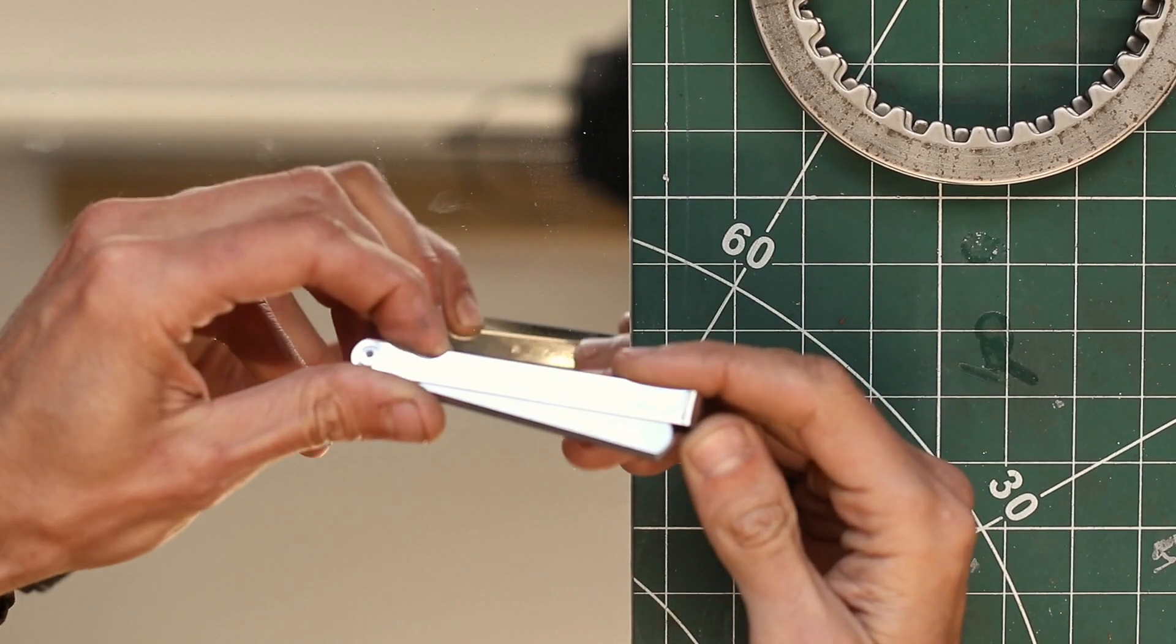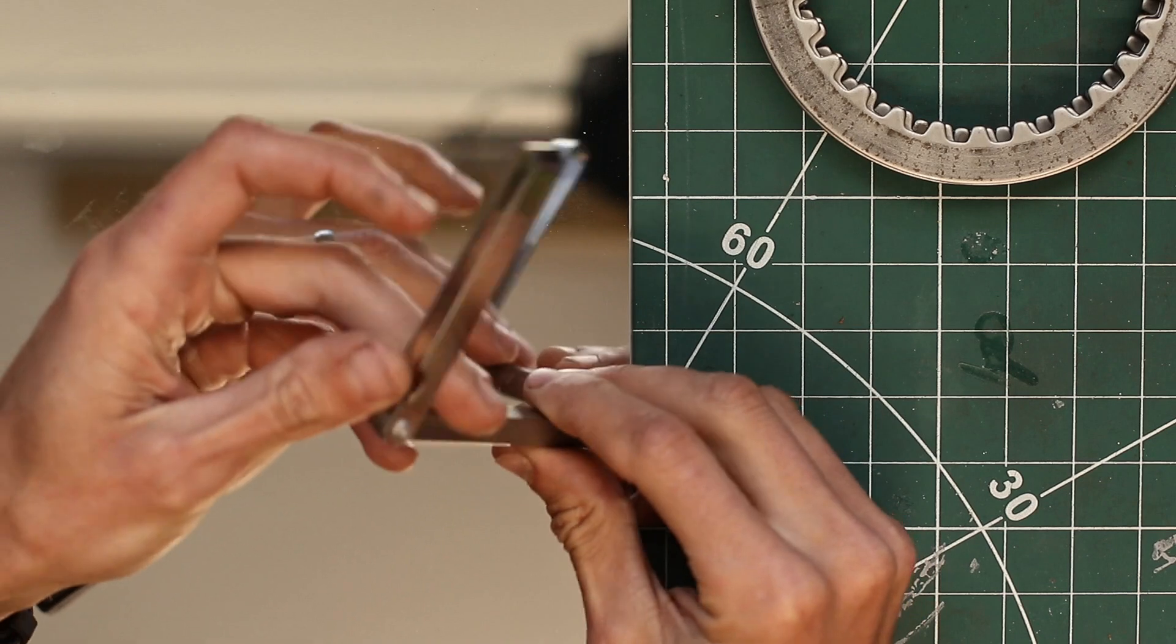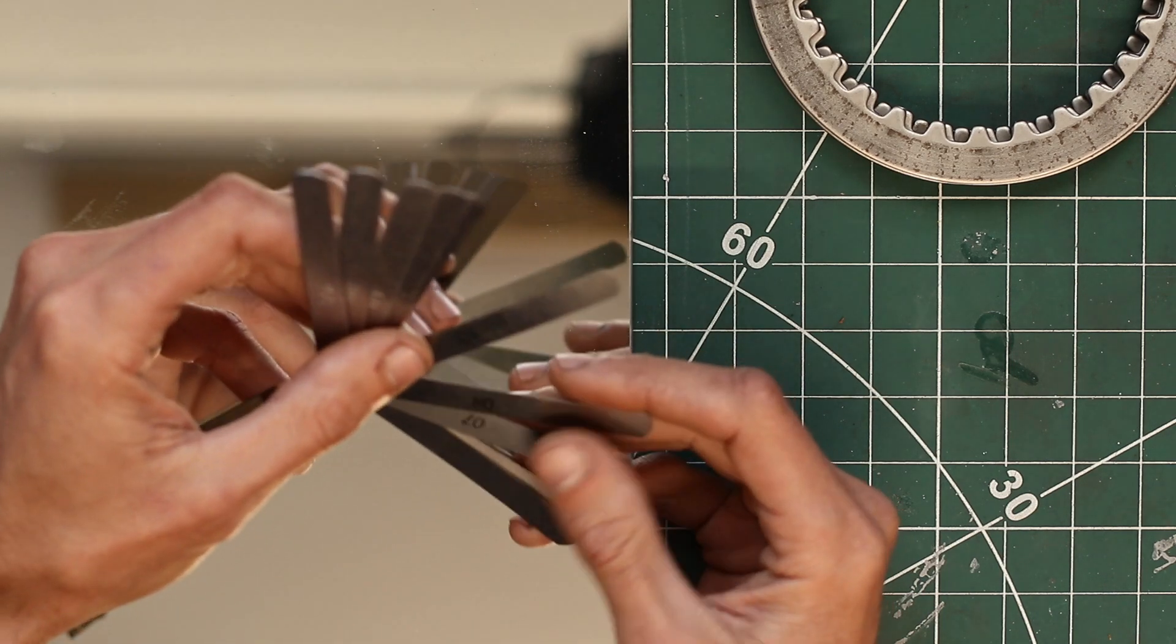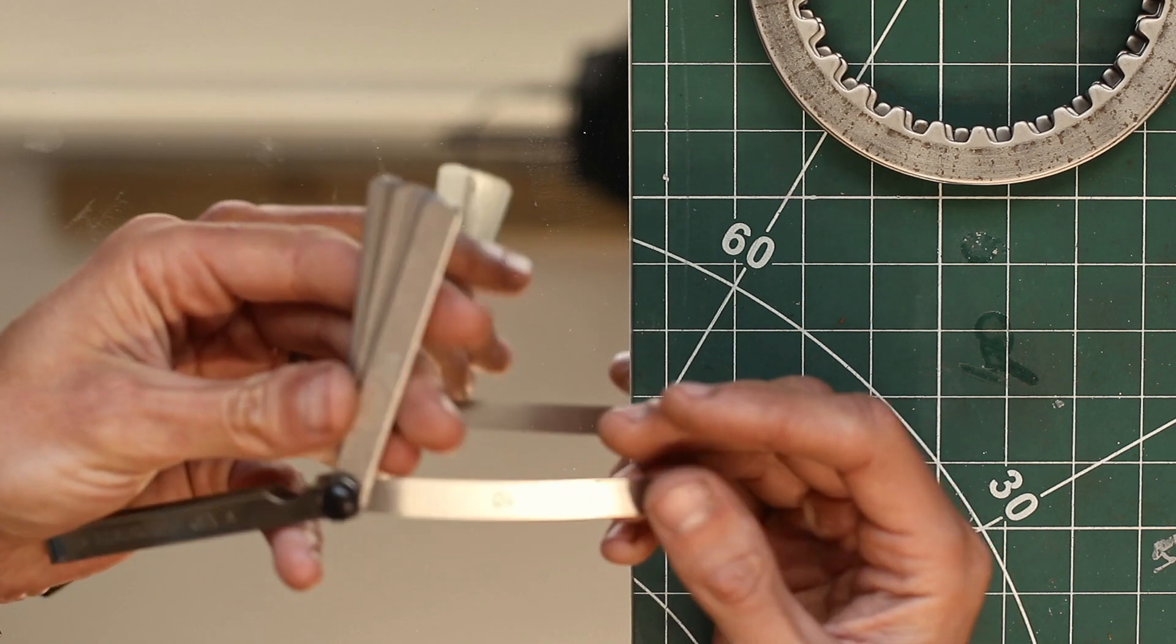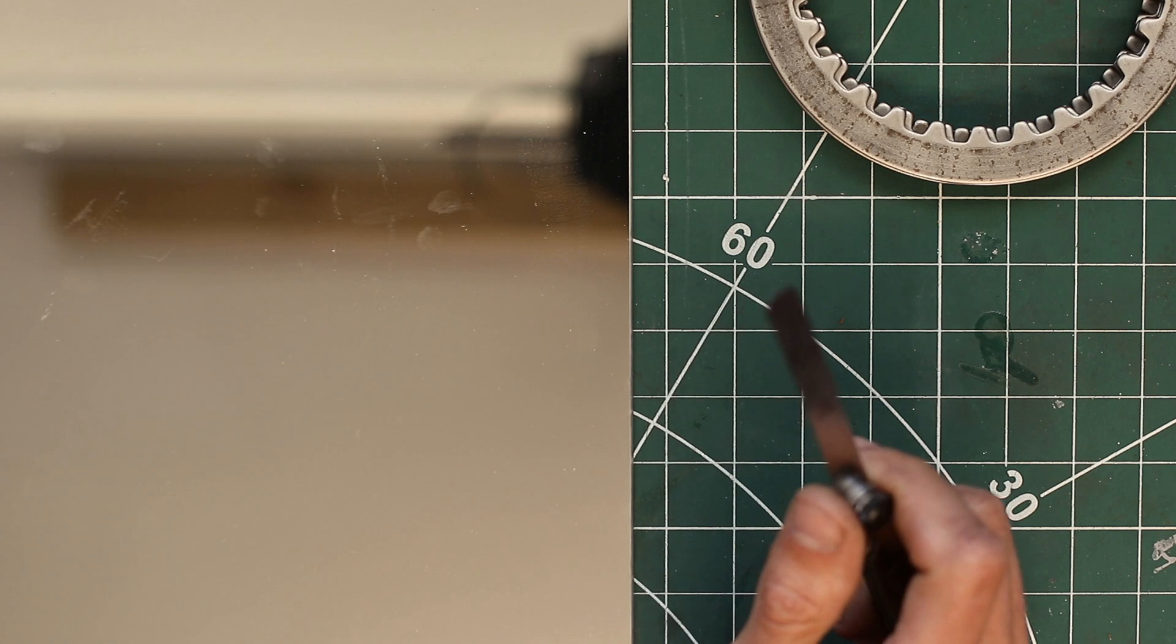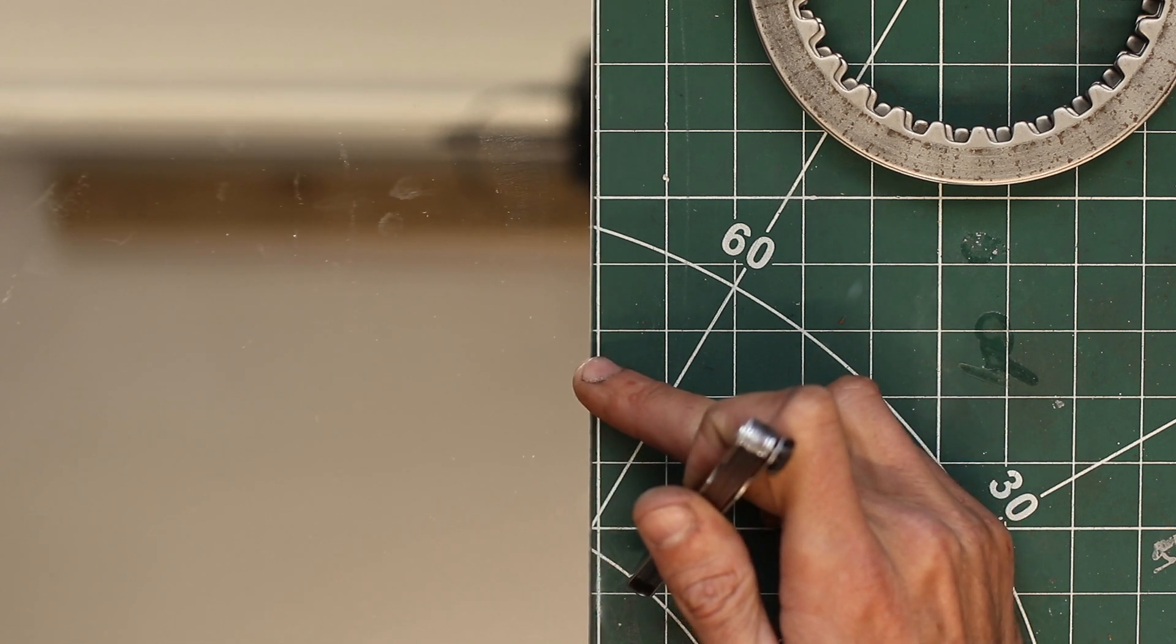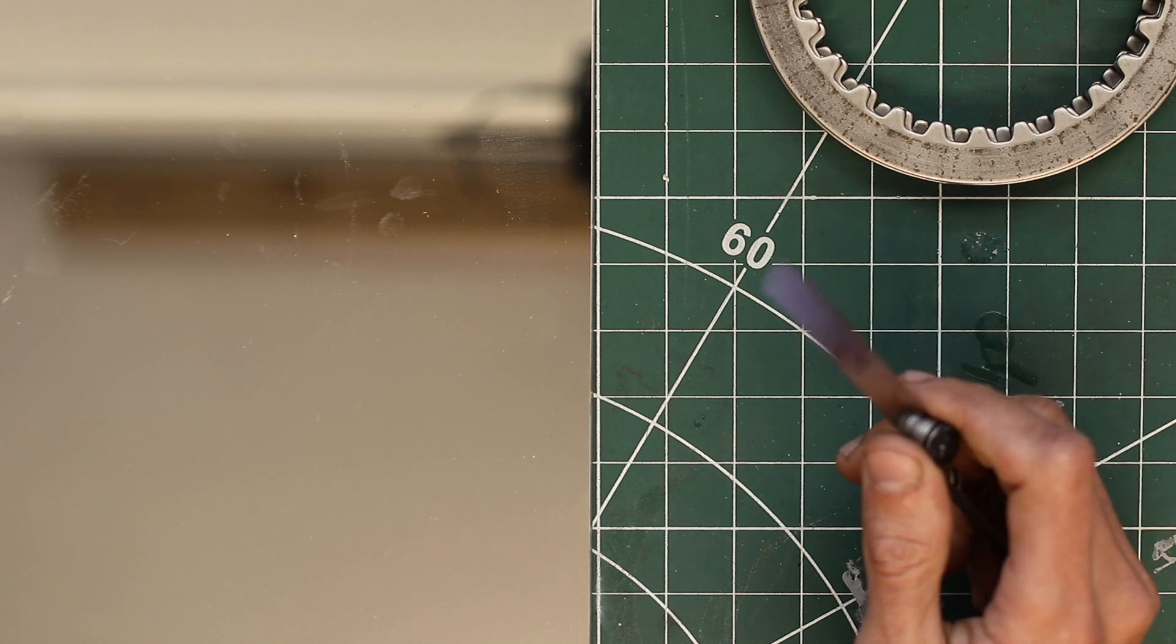Now in order to measure the warpage of the clutch plates, we are gonna need a feeler gauge, and we're gonna pick the 0.1 millimeter one, which is this one. And what we're also gonna need is a surface plate, which I don't have, and not many of us do. I mean, DIY mechanics or whatever.